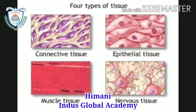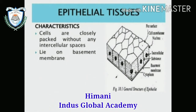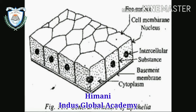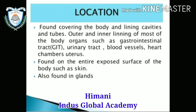Let's start with epithelial tissue. Characteristics: cells are closely packed — that means no intercellular spaces are present — and they lie on the basement membrane. That's the general structure. Location: epithelial tissue is found covering the body and lining cavities or tubes, forming the outer and inner lining of most body organs, such as the gastrointestinal tract (GIT).